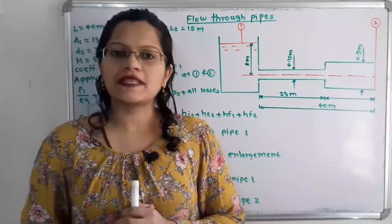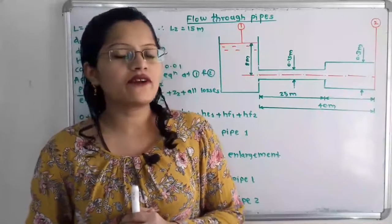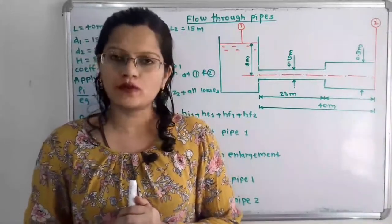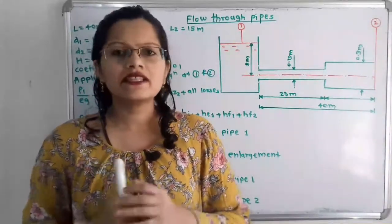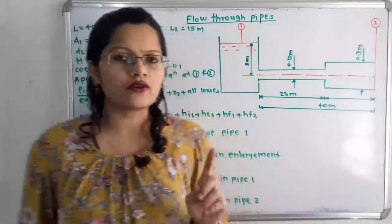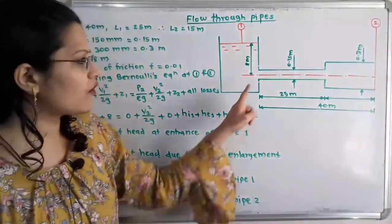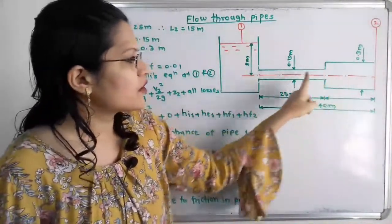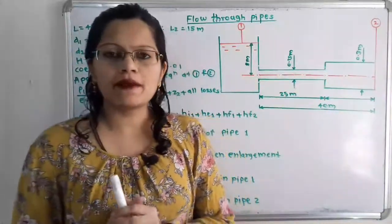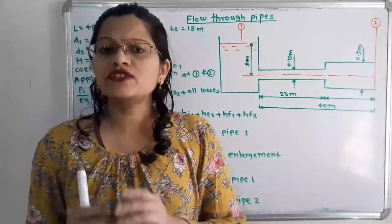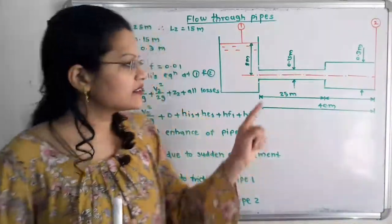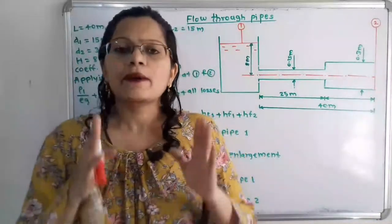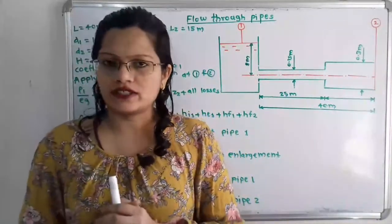Hello friends, this is Priyanka. Today we are going to solve a problem on flow through pipes. In this video, we are going to find out what is the rate of flow of water from a pipe with different cross-sectional areas, where one end is connected to a tank, considering major and minor losses.